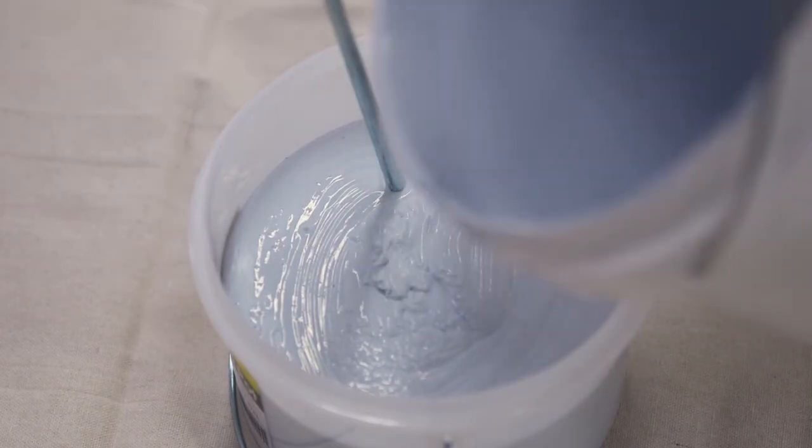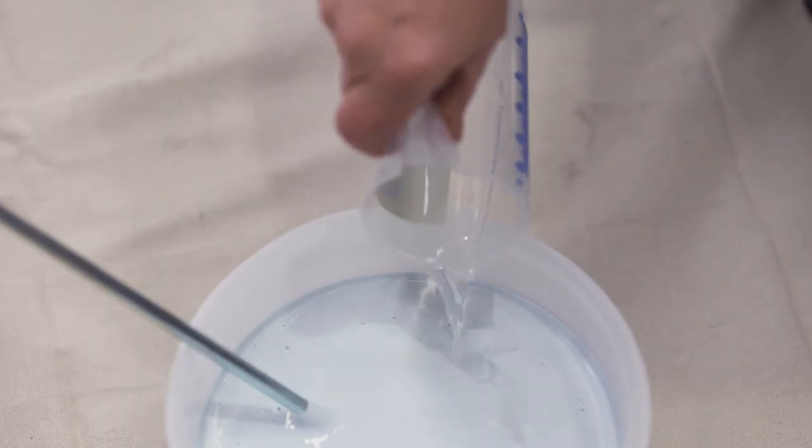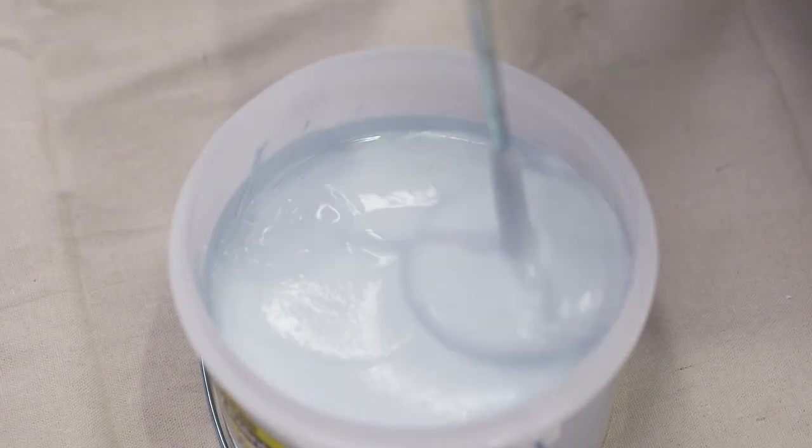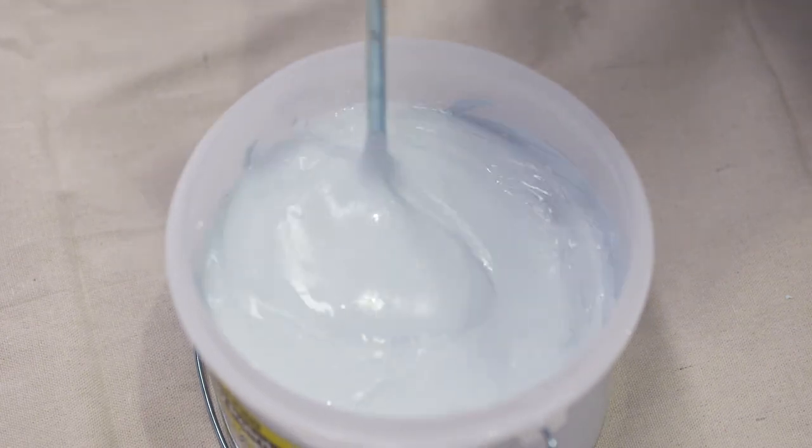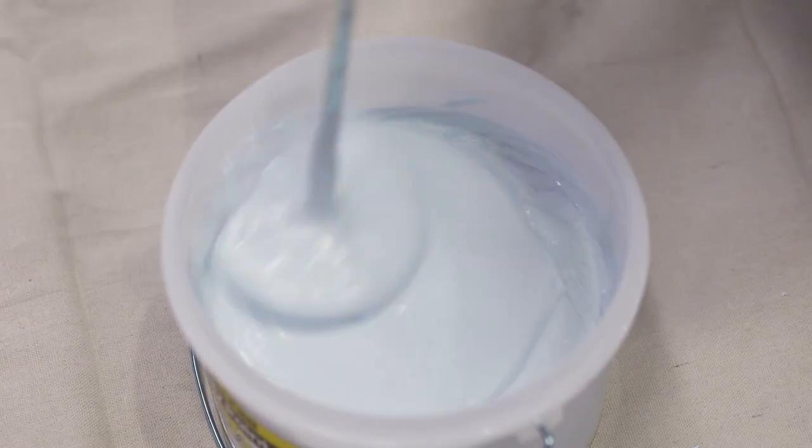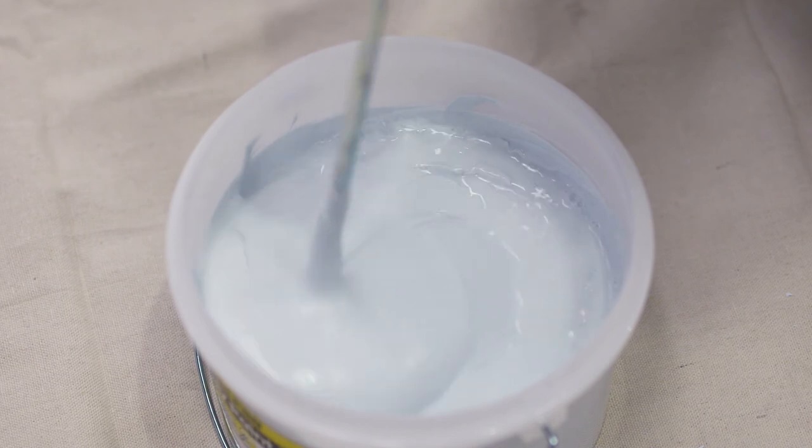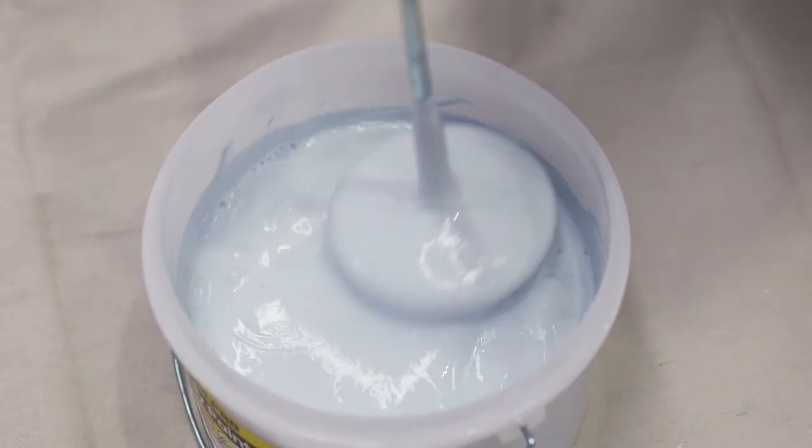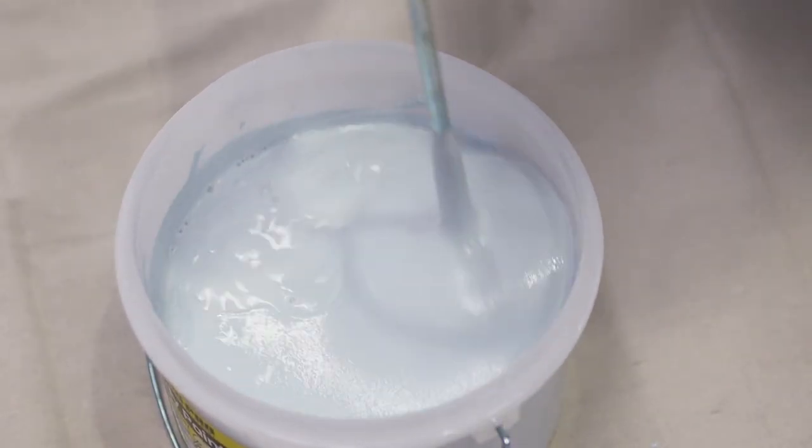Begin by diluting sand with around 70ml of water per 1 litre of product. Stir thoroughly with a broad paddle mixer or preferably a power drill mixer. This should be repeated periodically during the application process to avoid the sand granules settling at the bottom.